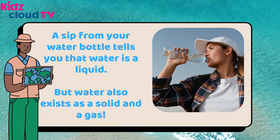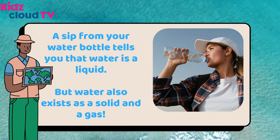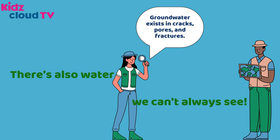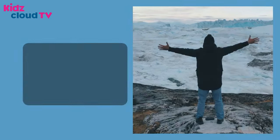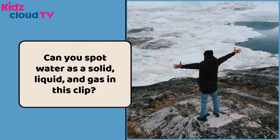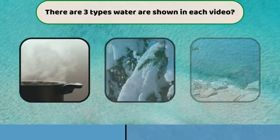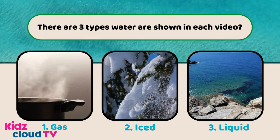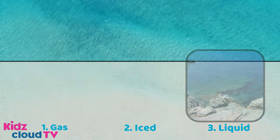Sipping from your water bottle tells you that water is a liquid, but water also exists as a solid and a gas. There's also water we can't always see — groundwater exists in cracks, pores, and fractures. Can you spot water as a solid, liquid, and gas in this clip? First is gas, second is ice, third is liquid.